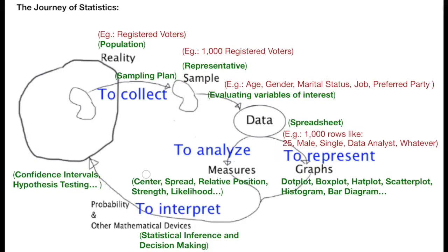We can classify the measures that we will study in measures of center, spread, relative position, strength and likelihood. And some of the graphs that we will see are dot plot, box plot, hat plot, scatter plot, histogram and bar diagram.